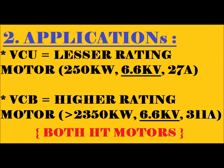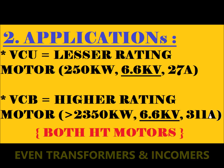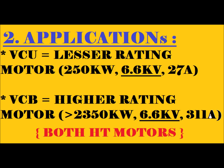The second difference is application. Both VCU and VCB are used in HV panels, but VCU is used for lower-rating motor feeders — for example, 250kW with a current rating of 27A at 6.6kV. VCB is used for motor feeders, transformer feeders, and incomer feeders — for example, 2350kW (2.35MW) or 3MW with a current rating of 311A at 6.6kV.